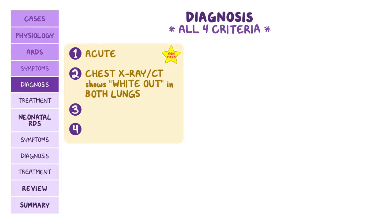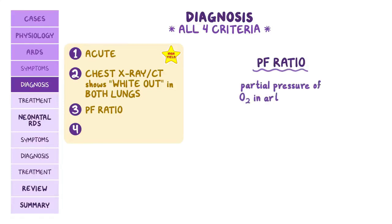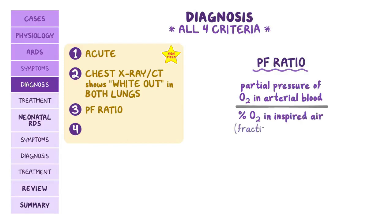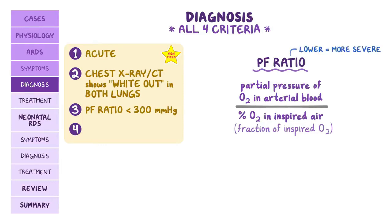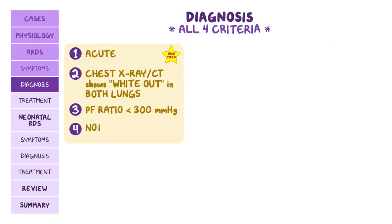The third criterion is the PF ratio — the partial pressure of oxygen in the arterial blood divided by the fraction of inspired oxygen. In ARDS, gas exchange is defective, so the PF ratio is below 300 mmHg. The lower this ratio gets, the more severe the condition.